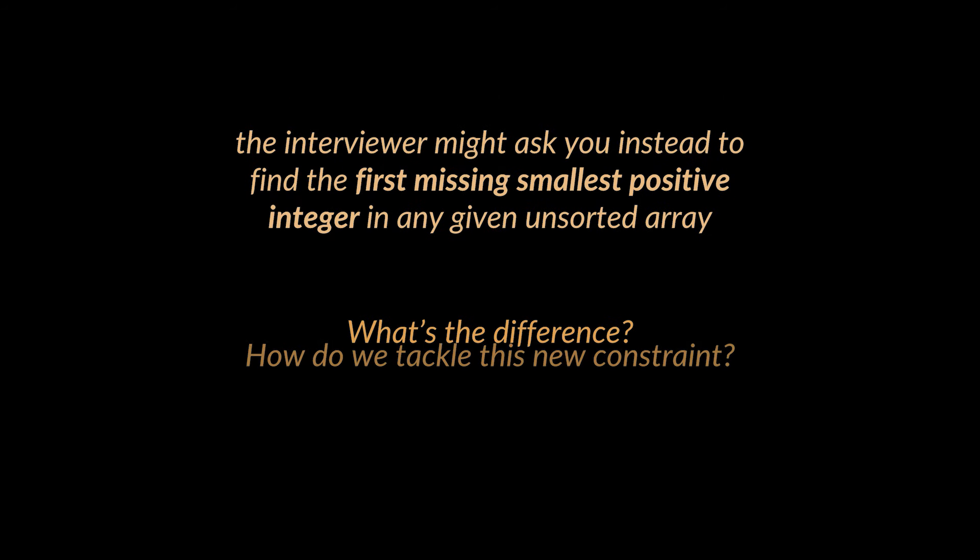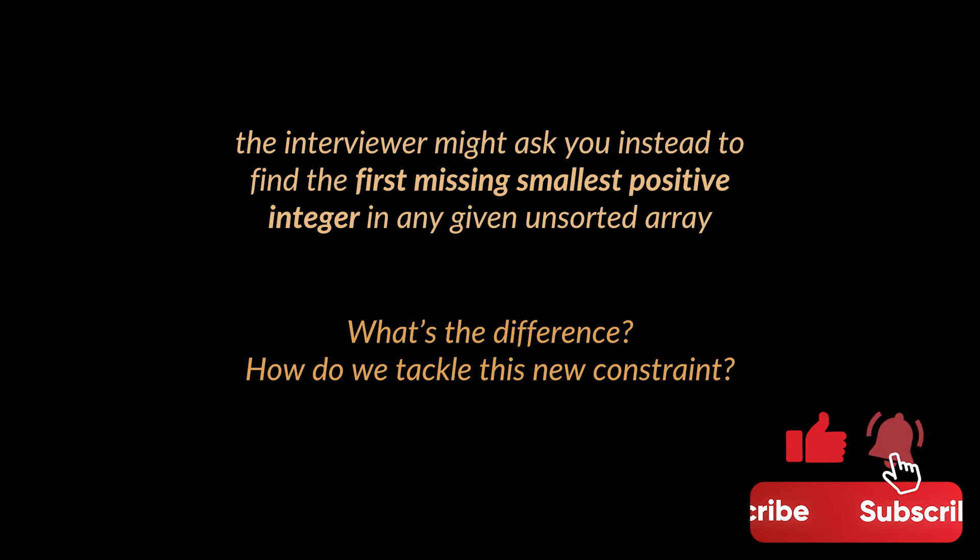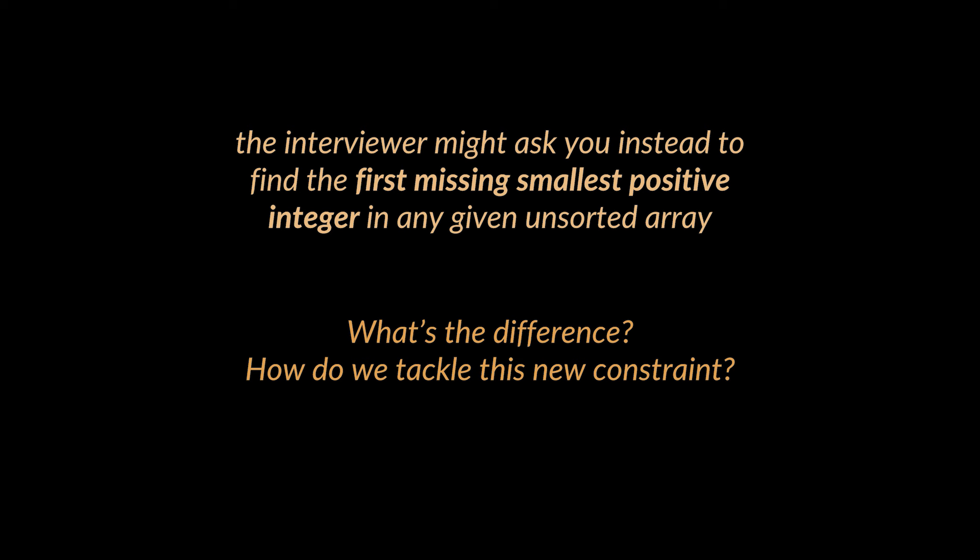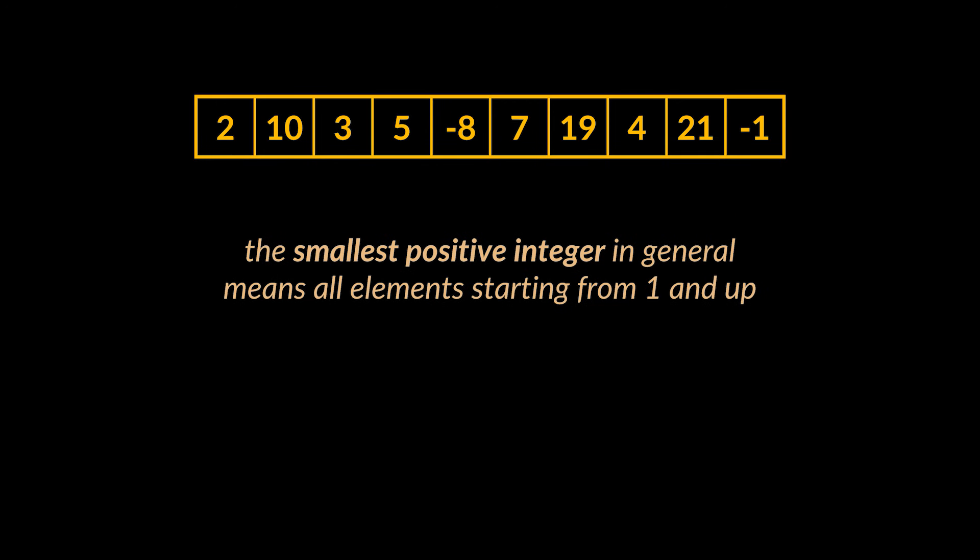After you solve this, the interviewer might decide to scale things up and instead ask you to find the first missing smallest positive integer in any given unsorted array. What's the difference and how do we tackle this new constraint? Take this array as an example. The elements stored inside it do not have to be within the n, nor array.length. They can be anything, even negatives.